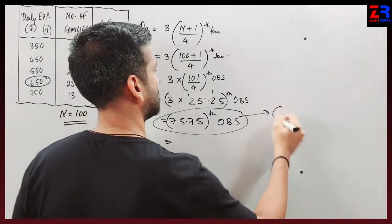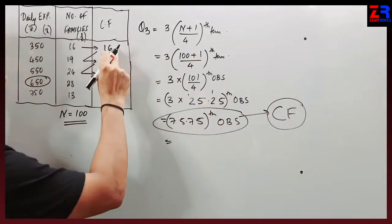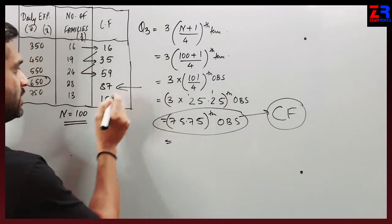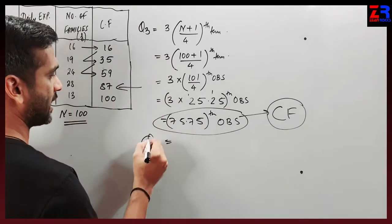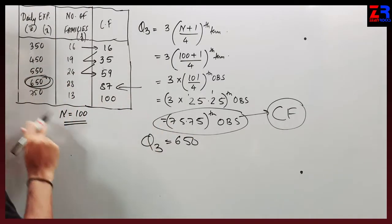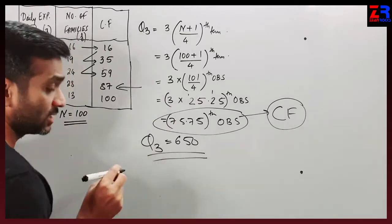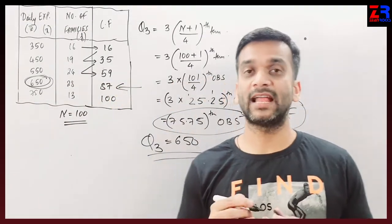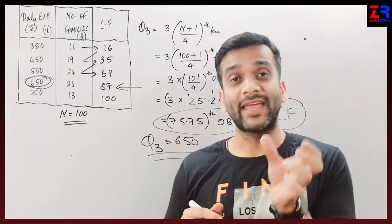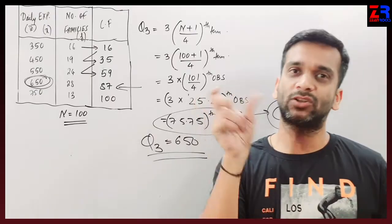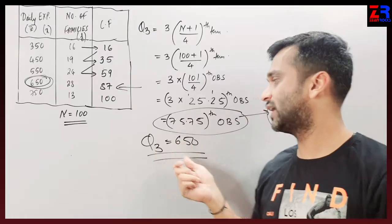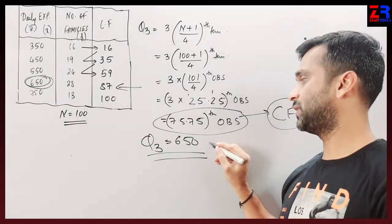Where to check? You have to check in the CF column. 75.75 falls in the class where CF is 156. So your quartile 3 is 650. But this is not the final answer - you have to write in words: 75% of families have expenditure below 650 rupees.